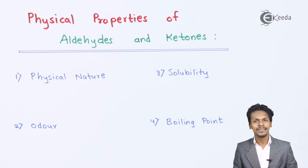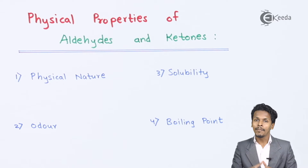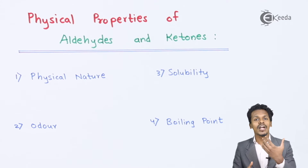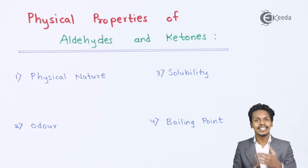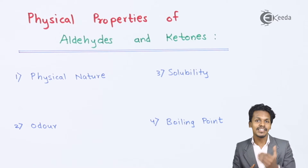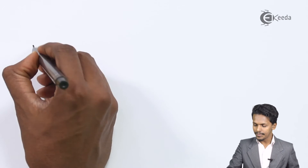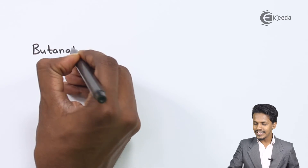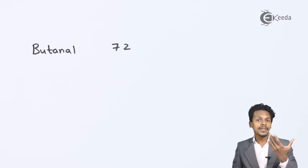Now let us move on to boiling point. The boiling point of aldehydes and ketones is very much higher compared to that of their respective hydrocarbons. But if we compare it with alcohols, aldehydes and ketones have a lower boiling point compared to their respective alcohol.